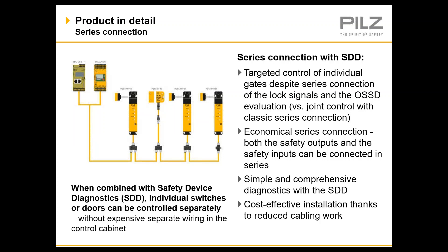This illustration shows an SDD multi-application featuring three M-locks and a coded switch in series. The key point about having an M-lock application within an SDD system is that individual specific gates can be commanded to open or close from a PLC, HMI, or push button, even though they are connected in a serial network. This is a very high degree of sophistication available in a very economical system.